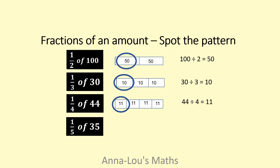A fifth of thirty-five: thirty-five divided by five. So when we're doing fractions of an amount and the fraction has a one as the numerator, I'm doing the amount divided by the denominator, because I'm splitting that number into that many equal parts.